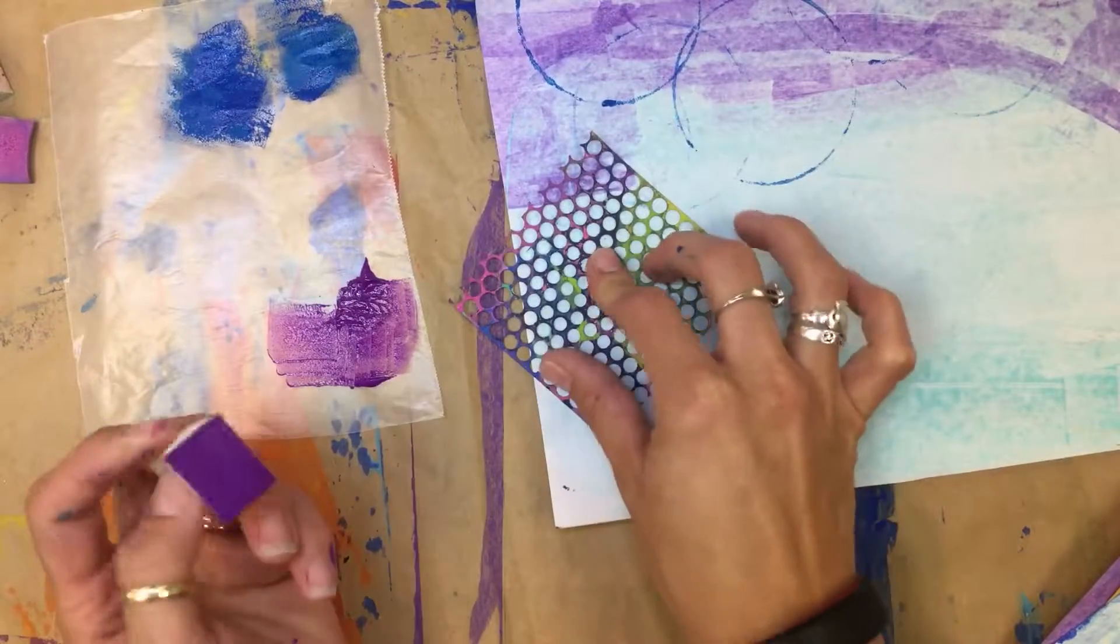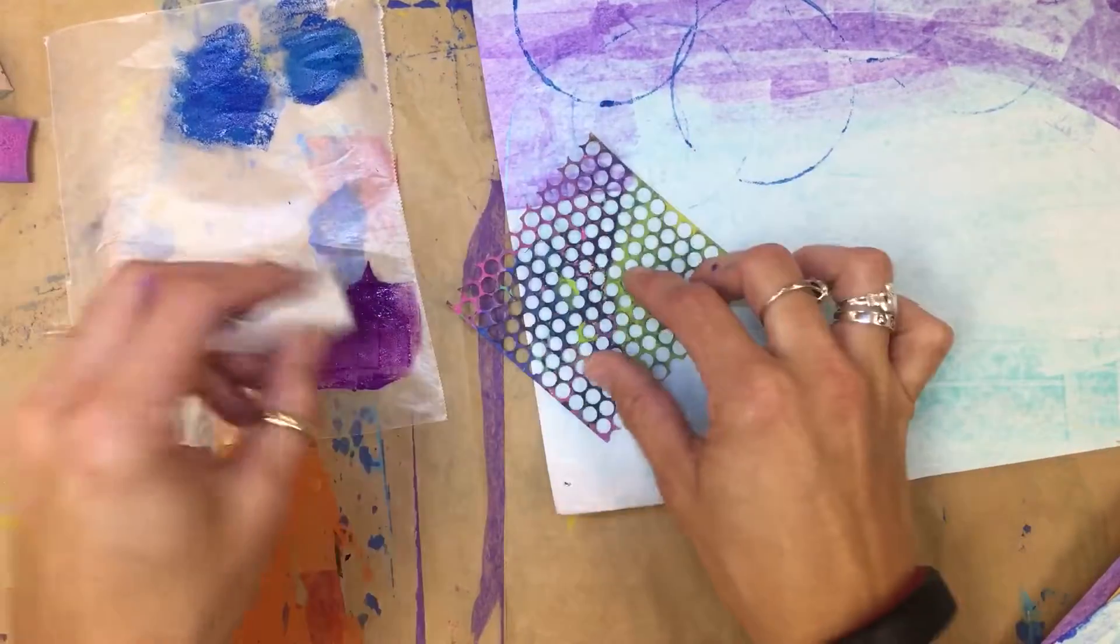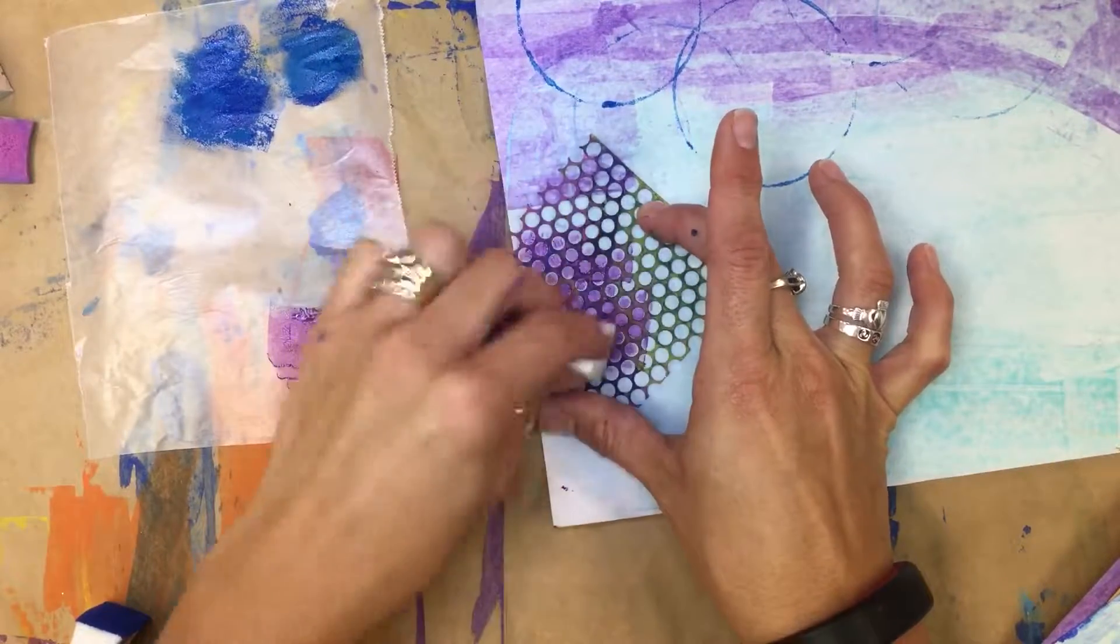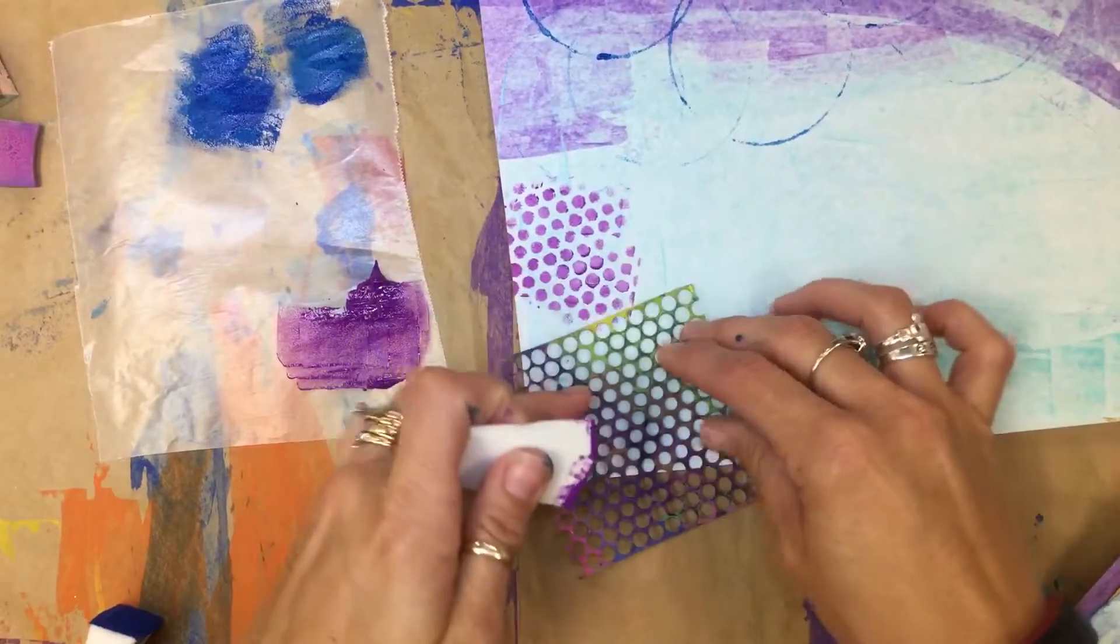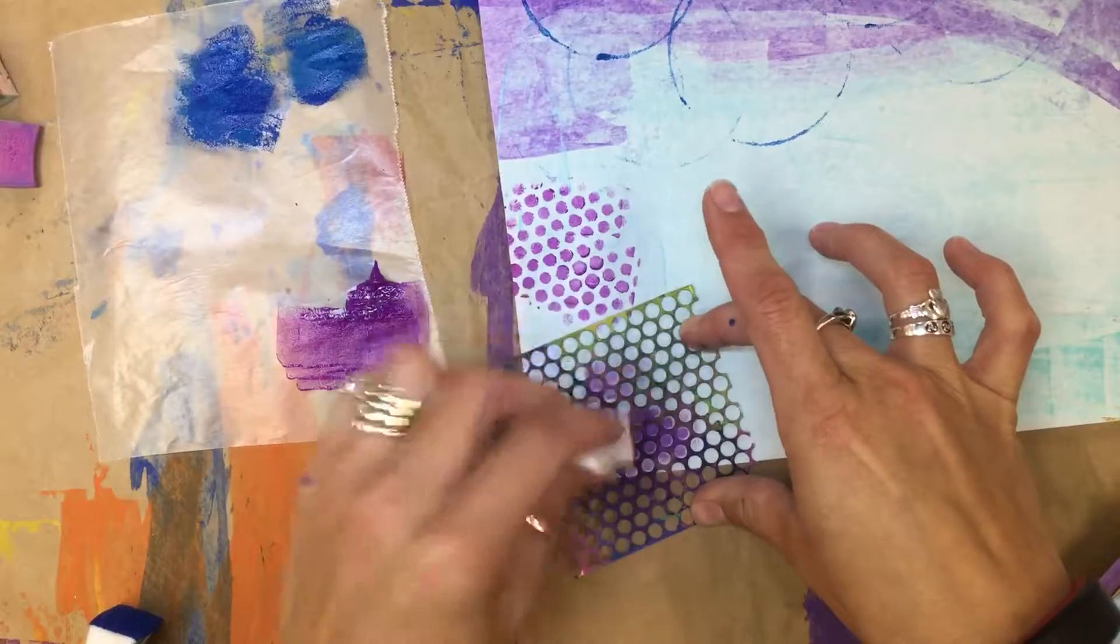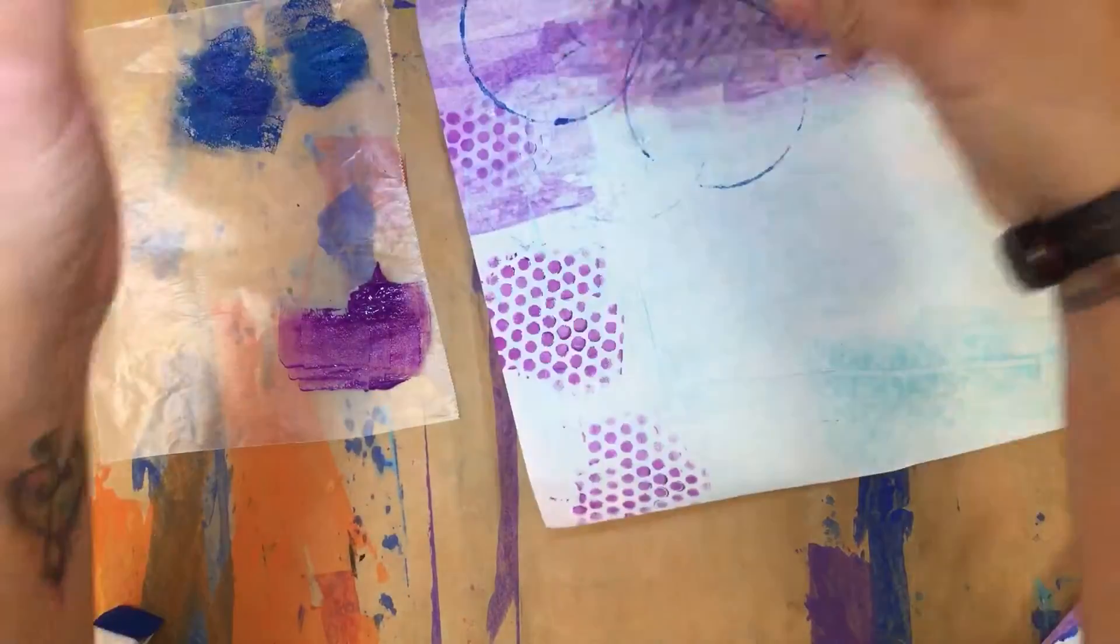So I'm dabbing this off again, and very, very lightly, it doesn't take much at all. Lightly dab that on there, and you can go around in different areas. I'm still using the same paint that was on there. Actually, this works really well when there's hardly any paint at all.